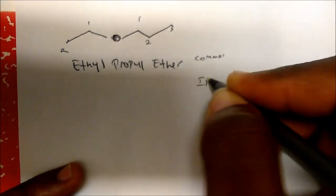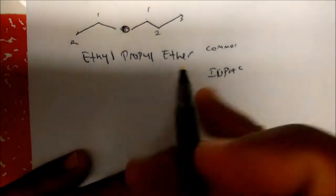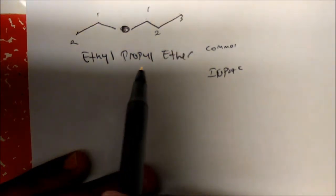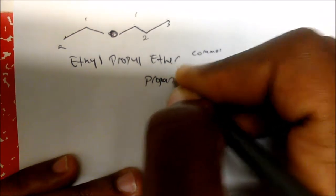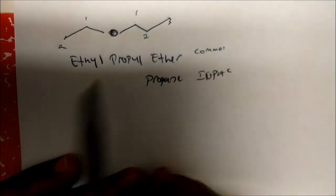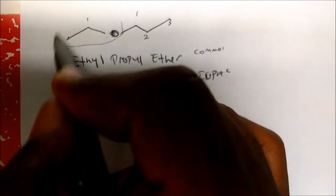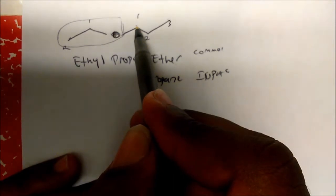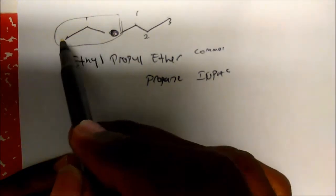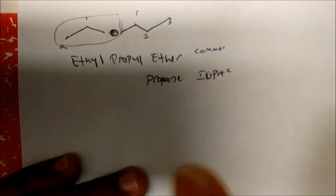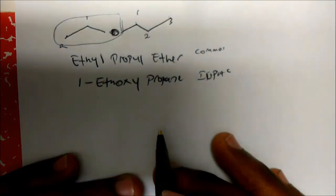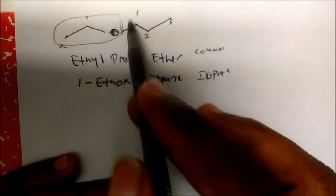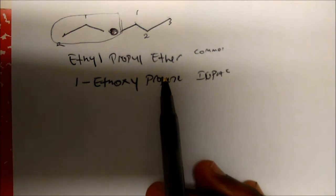So the common name is ethyl propyl ether. Now for the IUPAC name, we identify our longest continuous carbon chain as the parent. We have one, two, three carbons on the longer side, so our parent is propane. On carbon one we have this whole group — one, two carbons with an oxygen — so that's called ethoxy. This gives us 1-ethoxypropane as the IUPAC name.